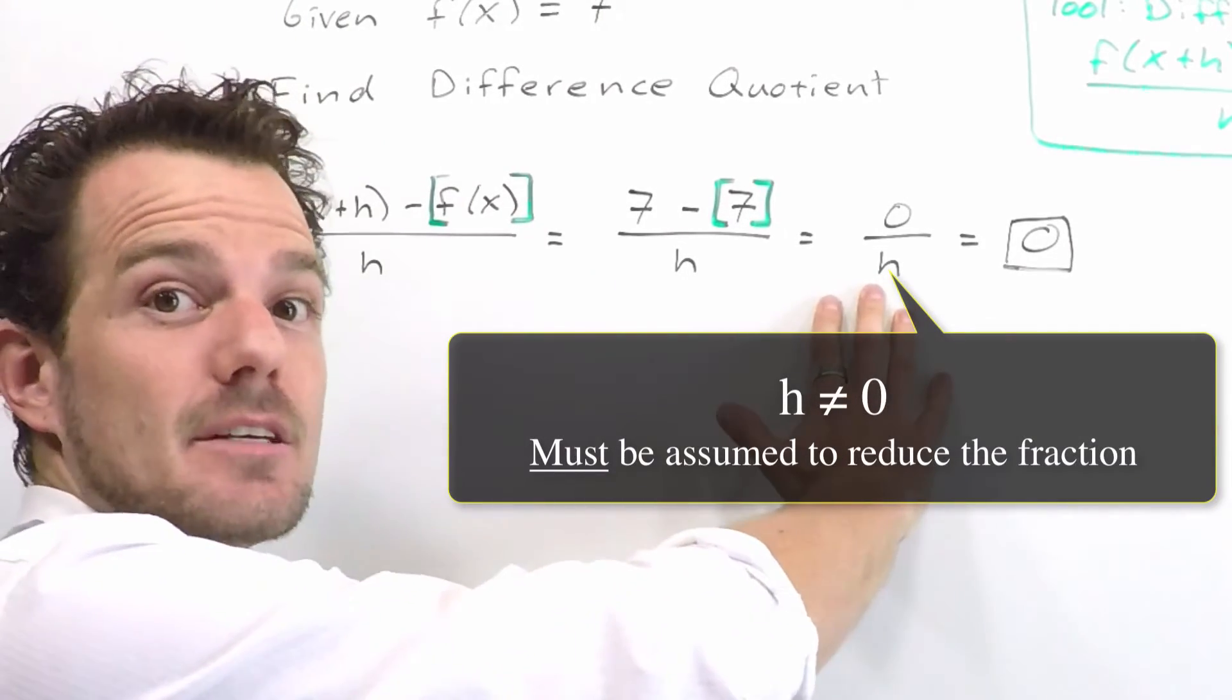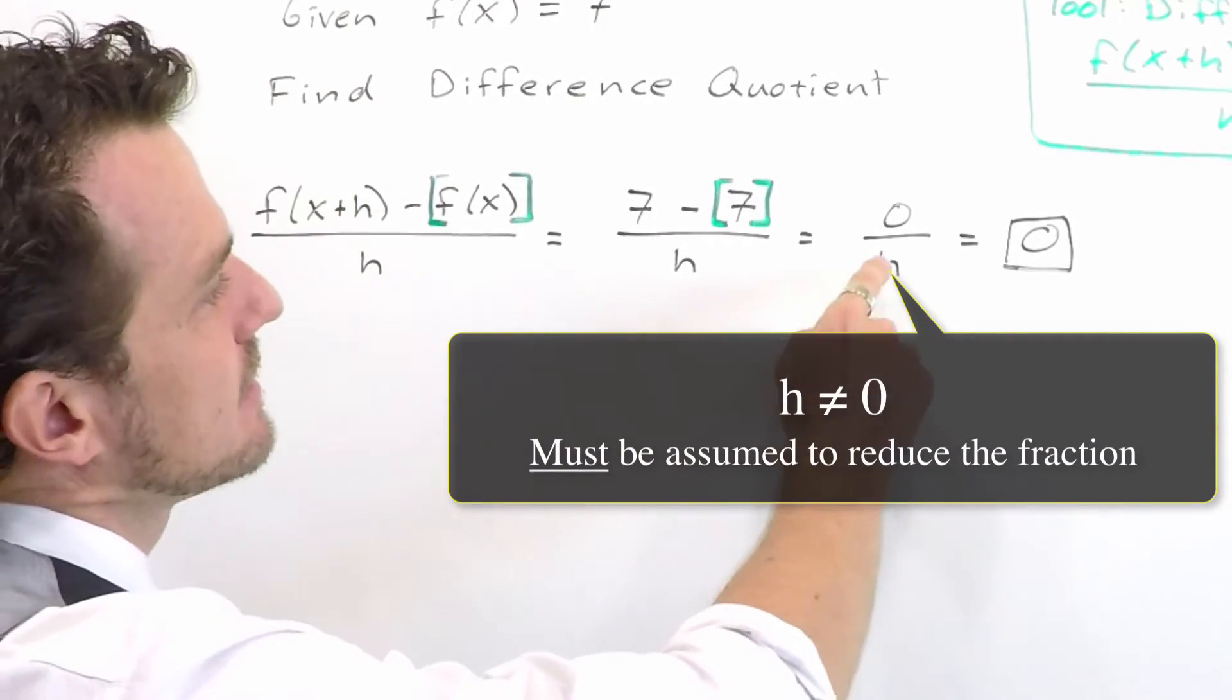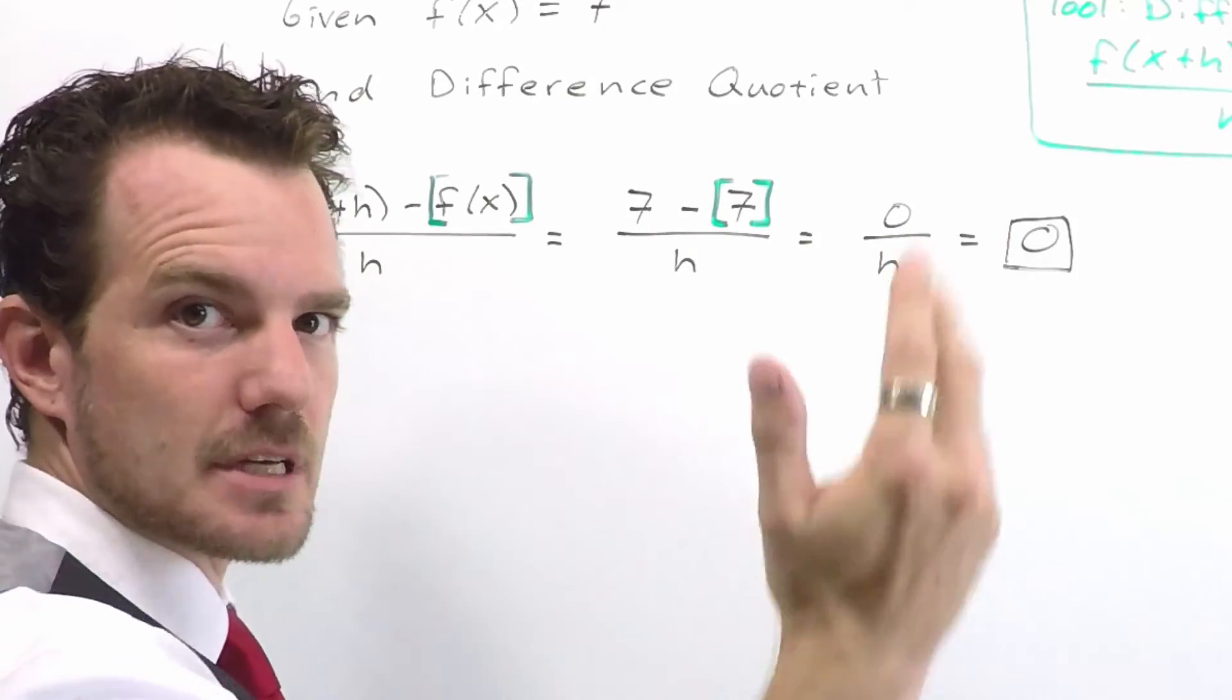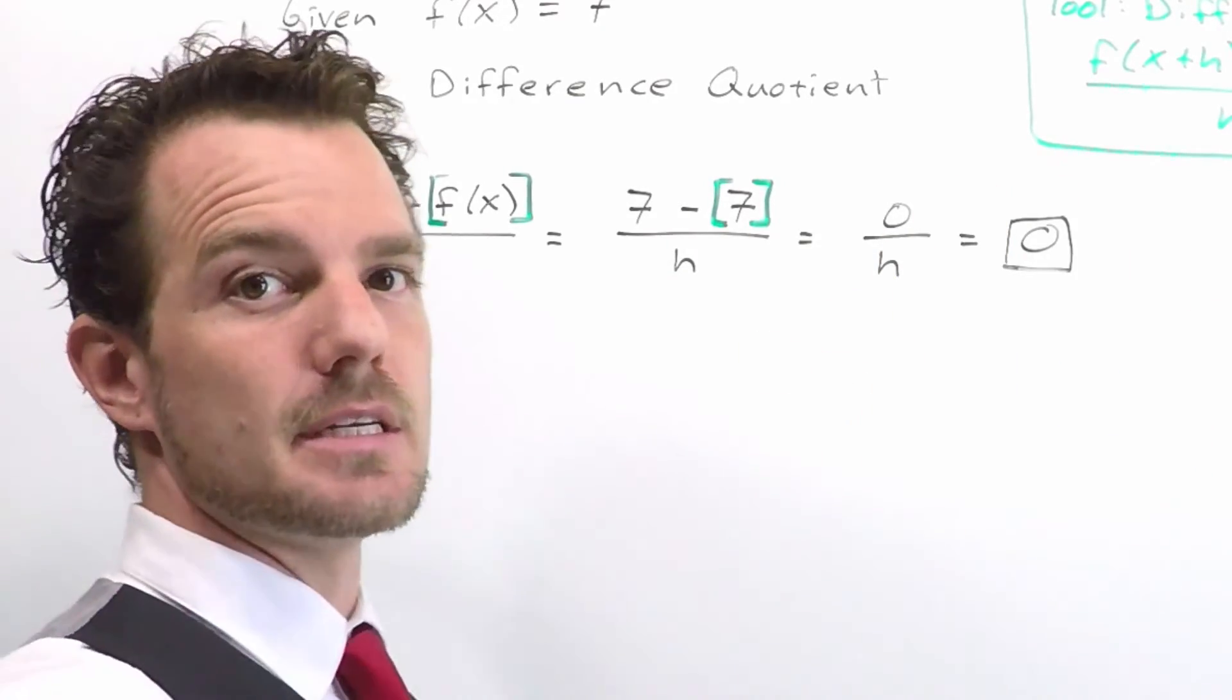We're assuming h is not 0. And 0 divided by some other type of number ends up being 0.